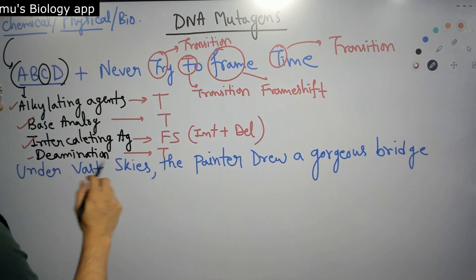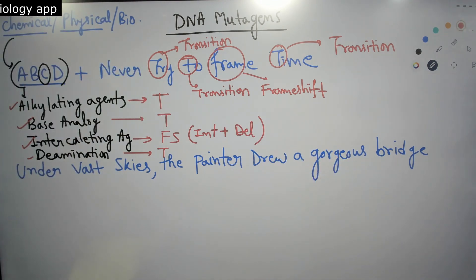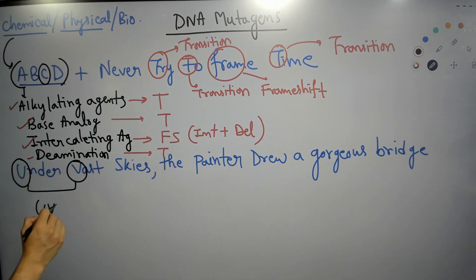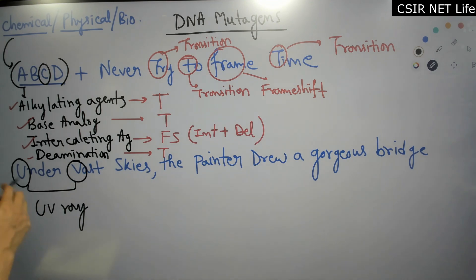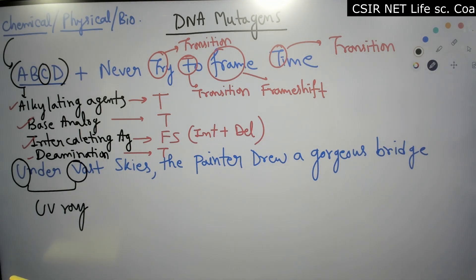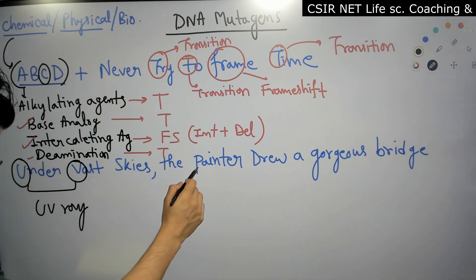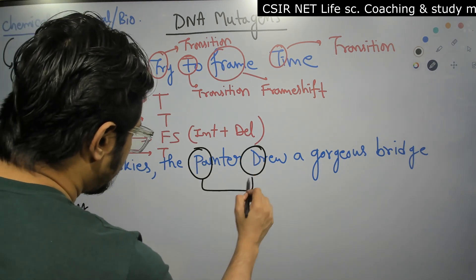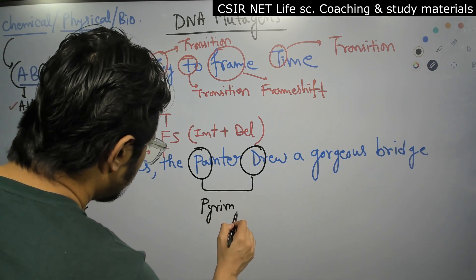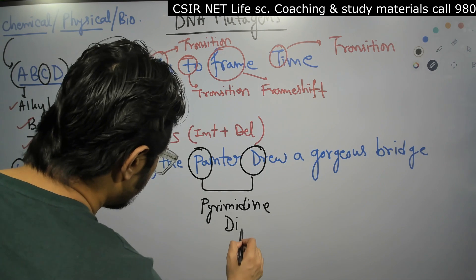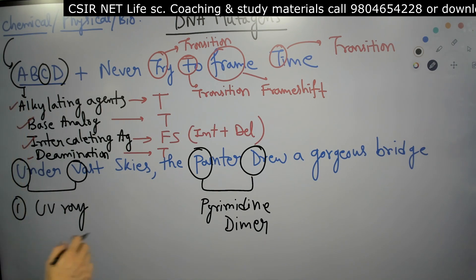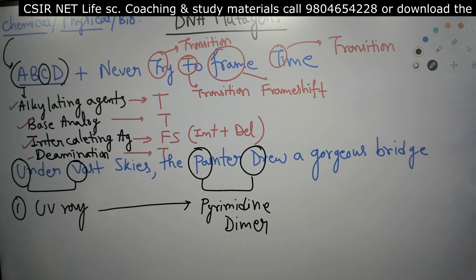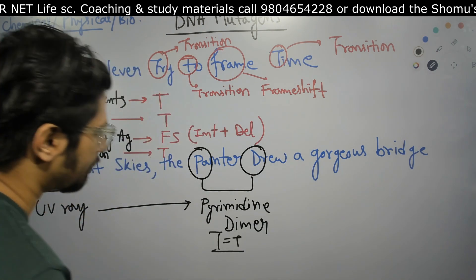Now let's move to physical mutagens: 'under vast skies, the painter drew a gorgeous bridge.' From 'under vast,' we get UV — so UV ray is one of the physical mutagen agents. And 'the painter drew' gives us P and D, which stands for pyrimidine dimer. So UV ray causes pyrimidine dimer formation, also known as thymine dimer formation.